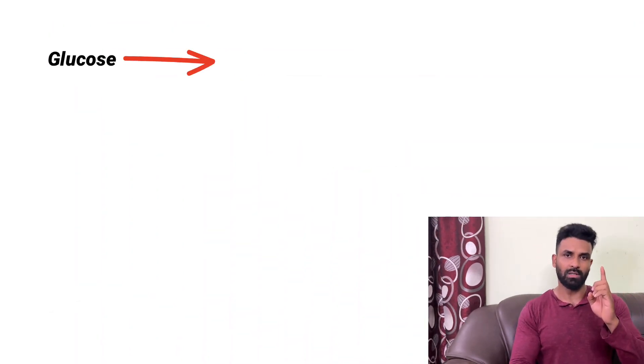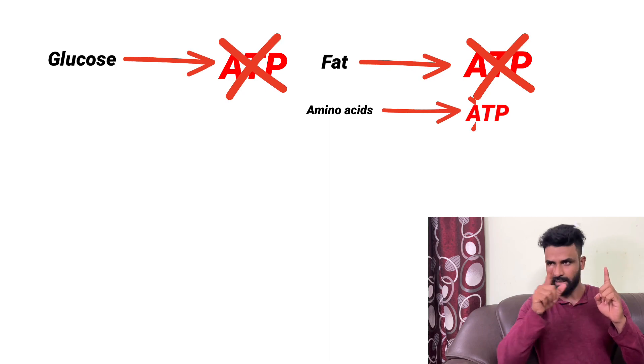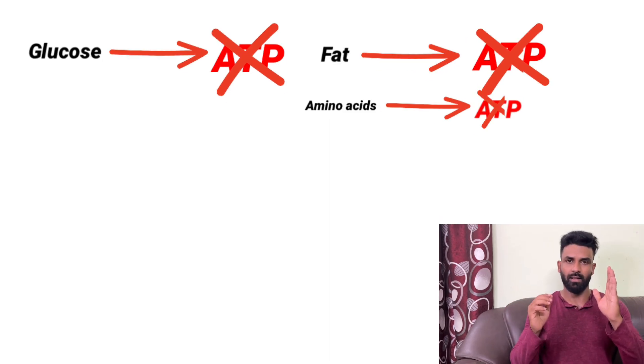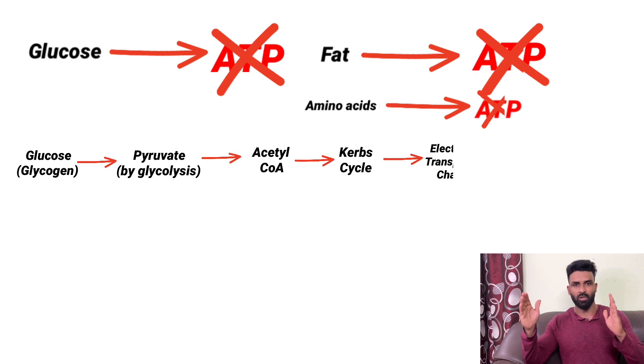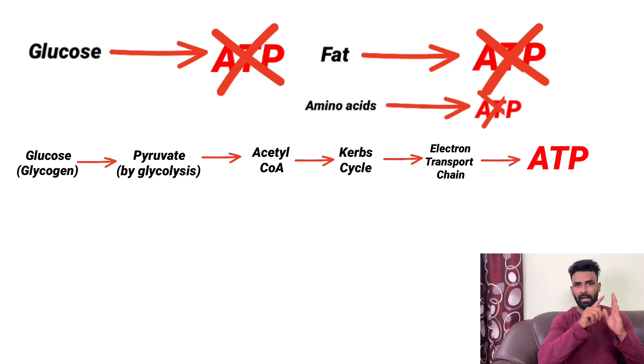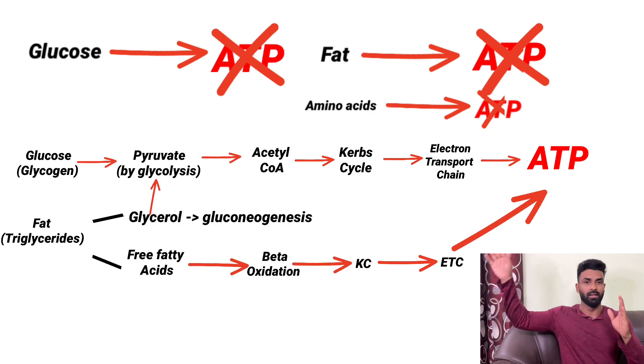When we look at our energy system, the primary source is glucose. Glucose stored as glycogen undergoes glycolysis to produce pyruvate, then enters the acetyl-CoA and Krebs cycle, then the electron transport chain, and finally generates ATP. For fats: triglycerides break into glycerol and free fatty acids, undergo beta-oxidation, enter the Krebs cycle, and produce ATP. For amino acids: gluconeogenesis and metabolism pathways ultimately generate ATP. These are many steps — if you are confused, you can find a complete video on this topic.